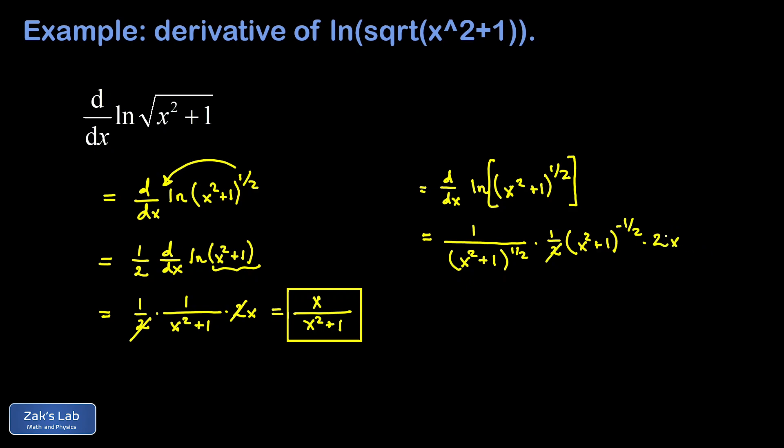So those twos cancel out. And that x squared plus one to the negative one half power, that's really just an x squared plus one to the positive one half power in the denominator. I can then combine that with the one that's already there to get x squared plus one. So we're left with the same answer, x over x squared plus one.